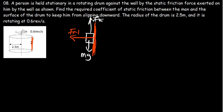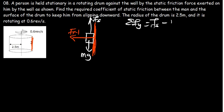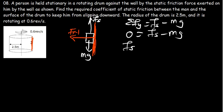The net force in the y-direction is supposed to be zero for this object to move in the x-direction only — there is no motion in the y-direction. Therefore, the summation of all the forces in the y-direction: we have the friction force pointing upward, which is static friction Fs, then minus mg pointing downward. So the net force is zero, meaning Fs minus mg equals zero, and therefore Fs equals mg.